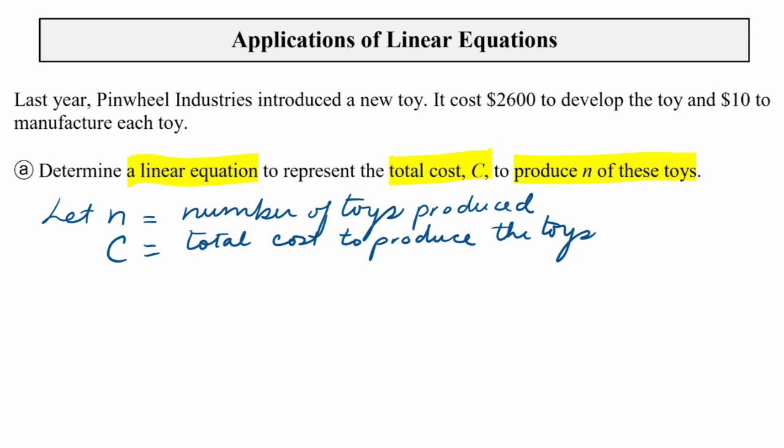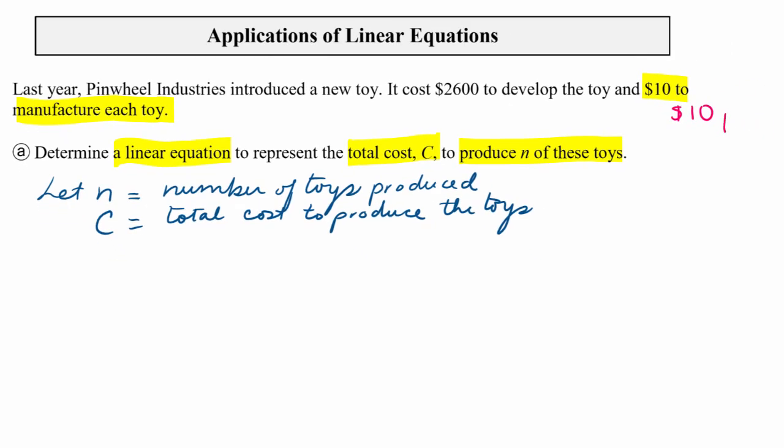Now if you're thinking $10 to manufacture each toy, or $10 per toy, $10 per toy, that is a rate. And that's going to be our M.